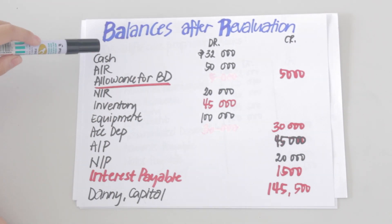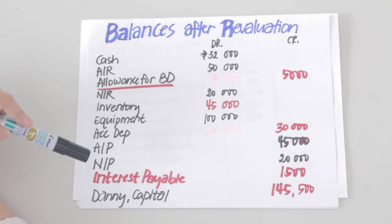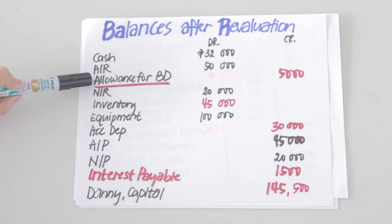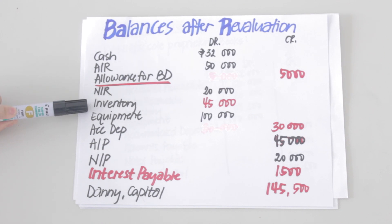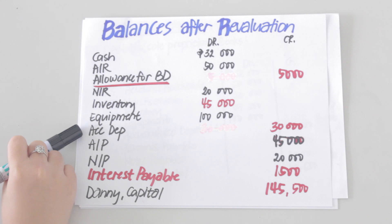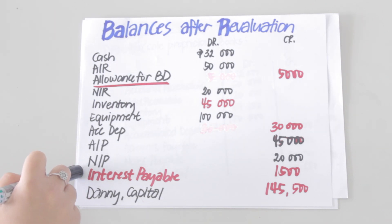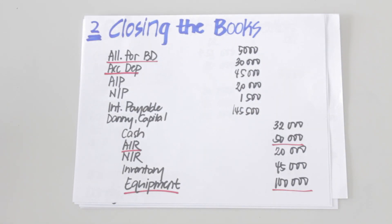After revaluation, we get the following balances. Accounts with no changes are: cash, accounts receivable, notes receivable, equipment, accounts payable, and notes payable. Since we revalued, we now have an allowance for bad debts of 5,000; inventory decreased to 45,000; accumulated depreciation is now 30,000; and interest payable of 1,500. Danny capital is now down to 145,500.